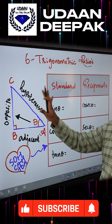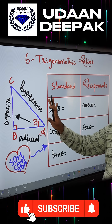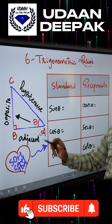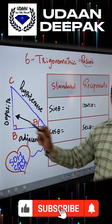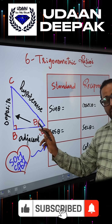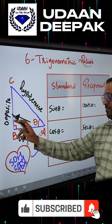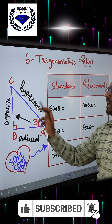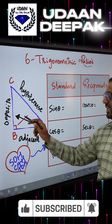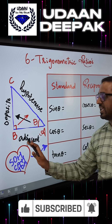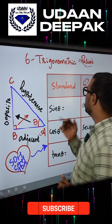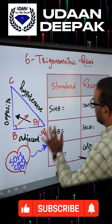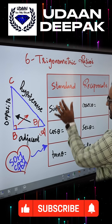Trigonometry is only valid for a right angle triangle. The angle opposite to theta is the opposite side, the side opposite to 90 degrees is the hypotenuse, and the remaining side is adjacent. Now, what is sine theta?